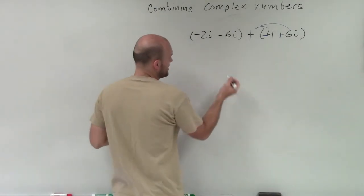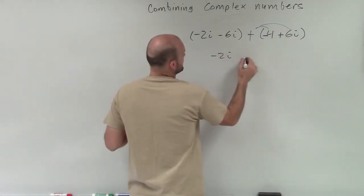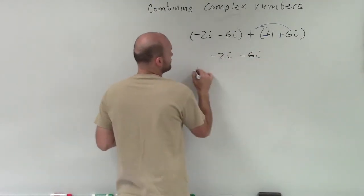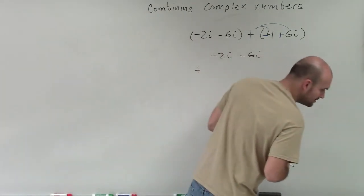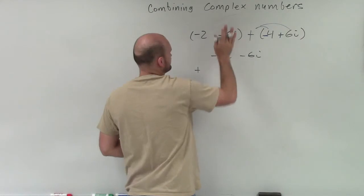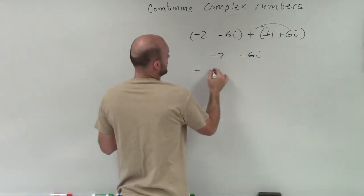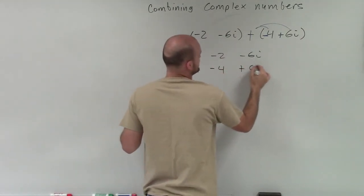Now, I can do this using the vertical method. So I have negative 2 minus 6i plus, that's not a negative 2, that's just a negative 2, minus 4 plus 6i.